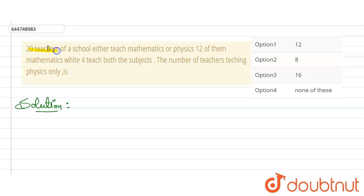It is given that 20 teachers of a school either teach mathematics or physics. 12 of them teach mathematics while 4 teach both the subjects. So we need to find the number of teachers teaching physics only. Four options are given.